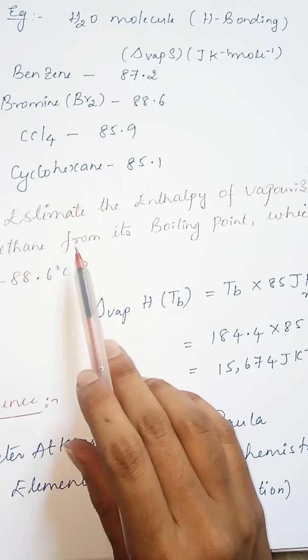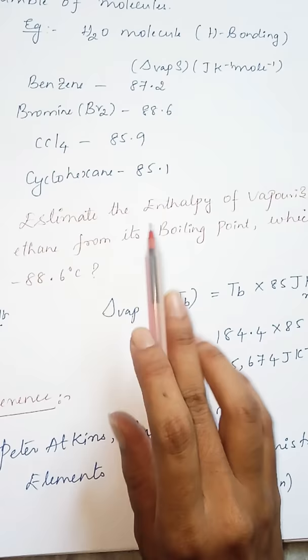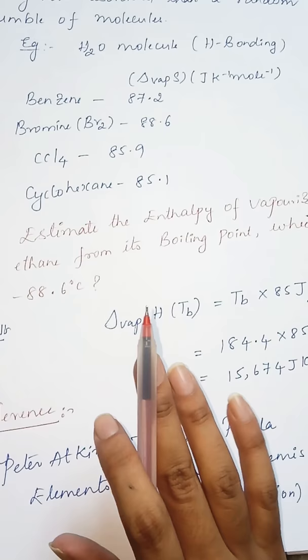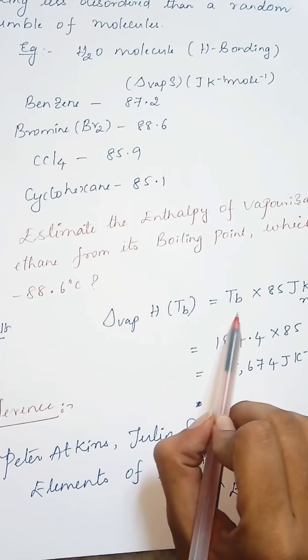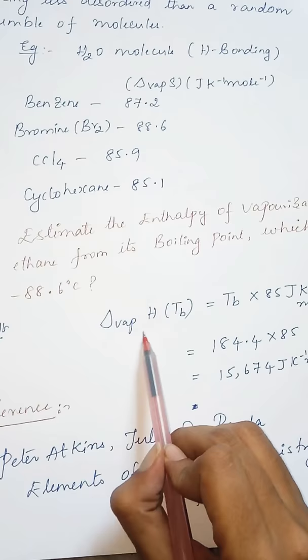The basic importance of Trouton's Rule is with very ease we can determine the enthalpy of vaporization if we simply know the boiling temperature of that particular liquid. This is one of the easiest ways to determine the enthalpy of vaporization.